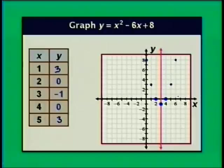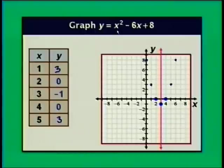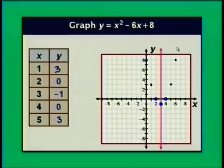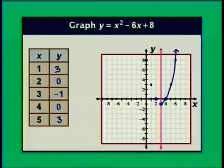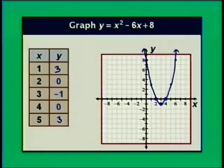Let's graph the parabola with the points we have. Erasing the line of symmetry, the parabola y equals x squared minus 6x plus 8 looks like this.